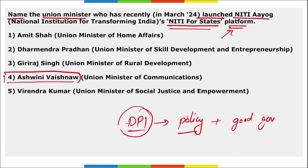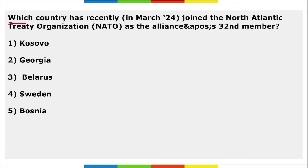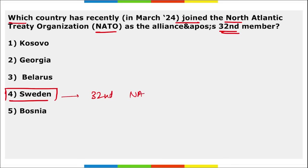Which country recently joined NATO as the 32nd member? It is Sweden that became the 32nd member of NATO — the North Atlantic Treaty Organization, a security alliance where an attack on any one of the 32 countries is considered an attack on all member countries.